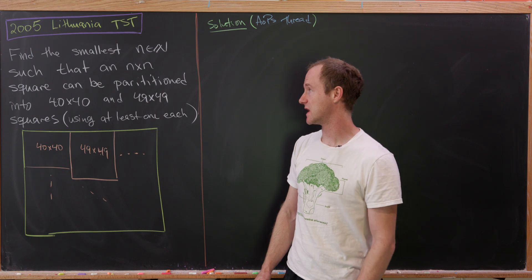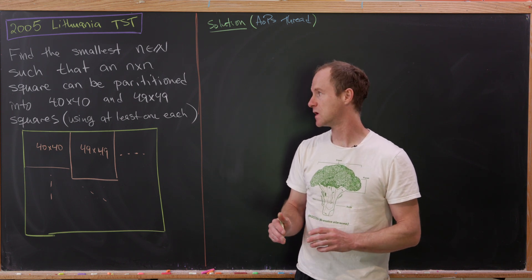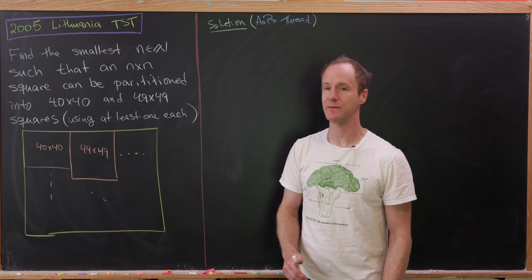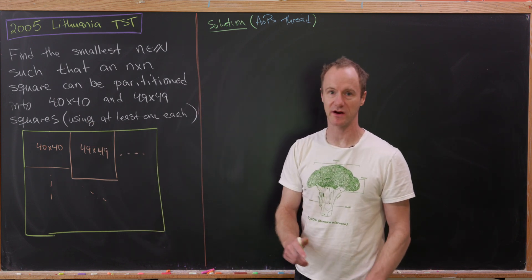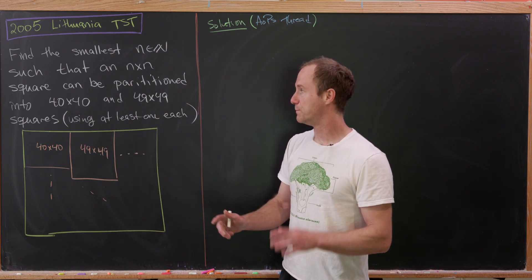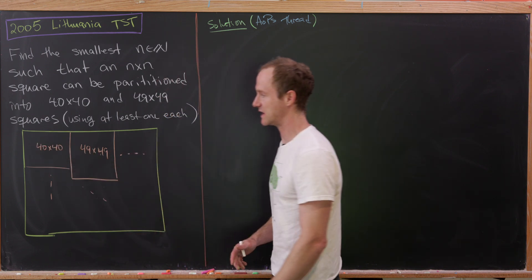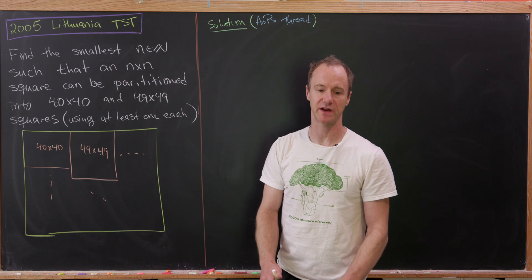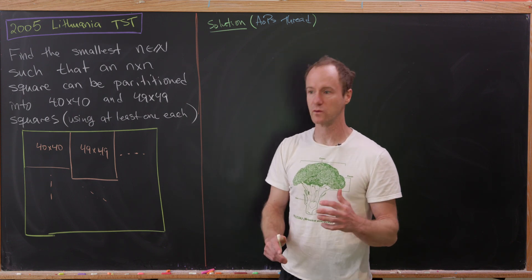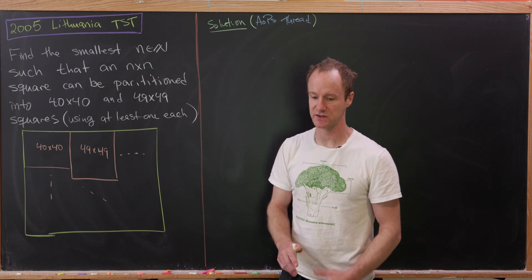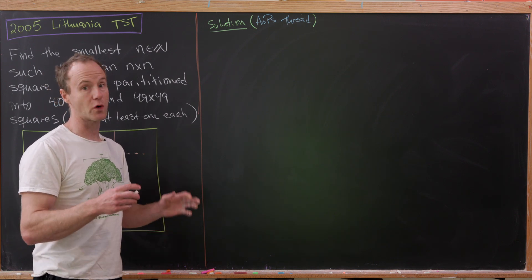Our goal is to find the smallest natural number n so that an n by n square can be partitioned into two types of smaller squares — one that's 40 by 40, and the other type is 49 by 49. To visualize: this big yellow square is our n by n square, broken down into pieces where perhaps the upper left bit is a 40 by 40 square, right next to it a 49 by 49, and so on. We take the rule that we must use at least one of each type. The solution is based off an Art of Problem Solving thread focused around this problem.